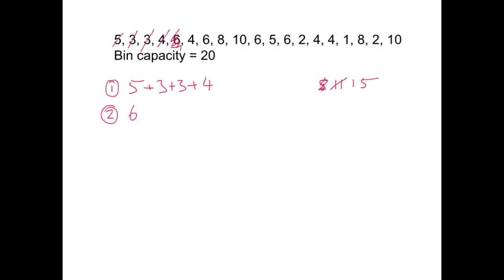The next one, 4, will fit into the first bin. You've always got to add into the first available one. So we put that one in there, cross that one off. That makes that total 19. Then the next number is a 6. Well, I can't fit that into the first bin, so that one goes into the second one. That now has a total of 12. Cross that off.